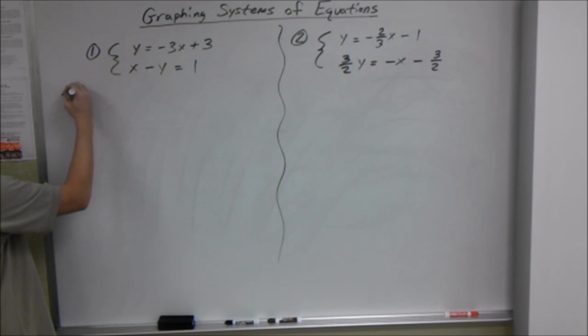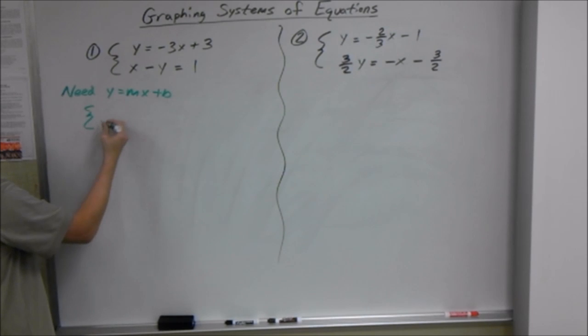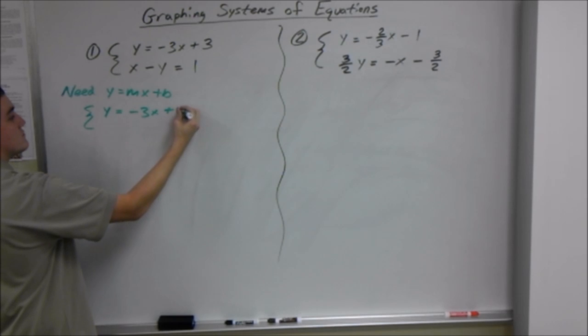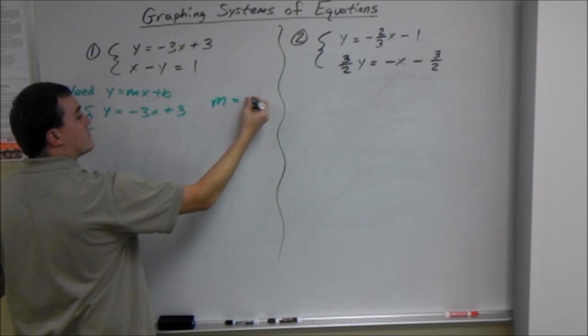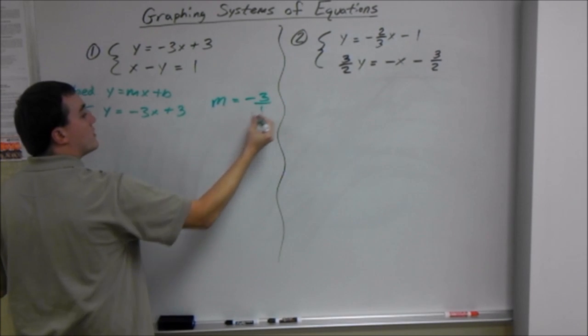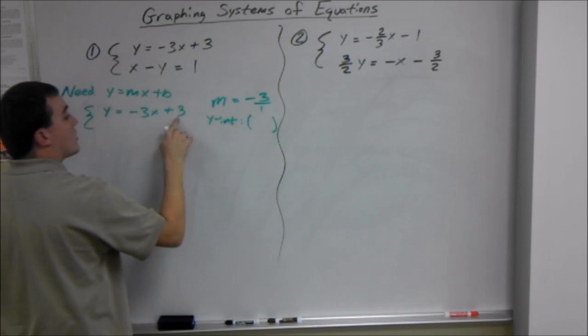We need y to graph it. Well, our first one here, in example one, is already in y equals mx plus b form. So we can rewrite that one. And here, our slope is just negative 3, or negative 3 over 1. And our y-intercept is 0 comma 3.